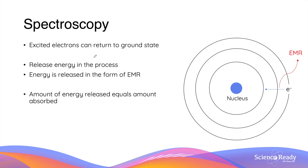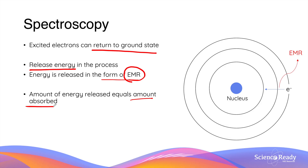The second component of spectroscopy is when the excited electrons return to the ground state — that is, return to their original orbits. In this process the electrons release energy in the form of electromagnetic radiation, and the amount of energy released equals the amount of energy absorbed. In other words, more energy absorbed during excitation means more energy released when the electrons return to the ground state.